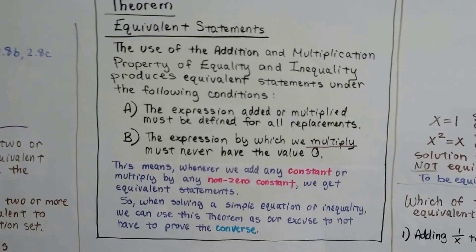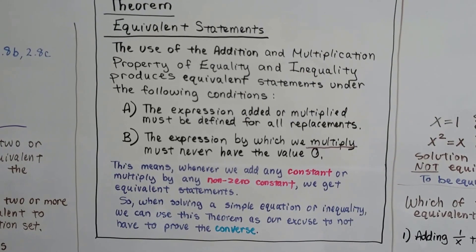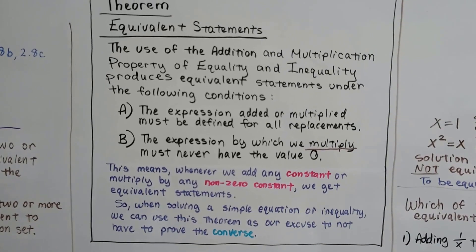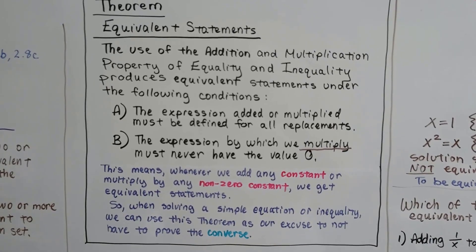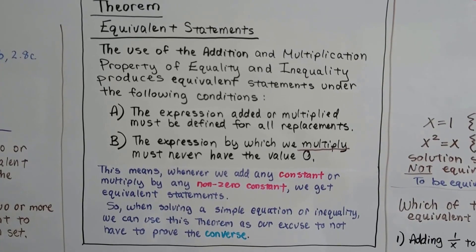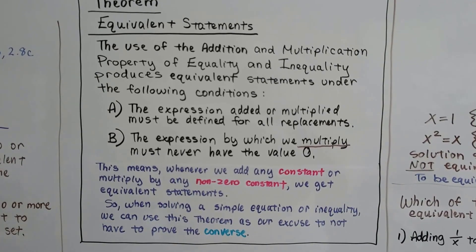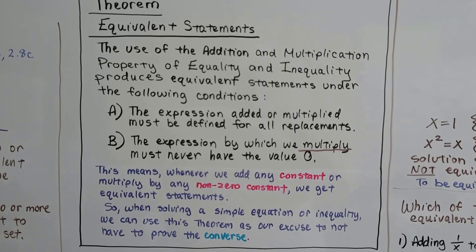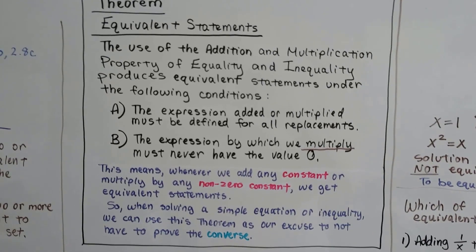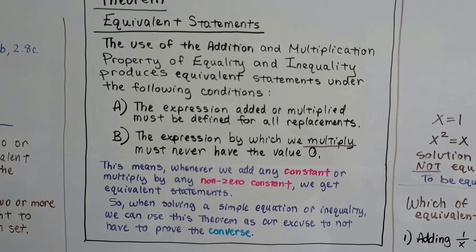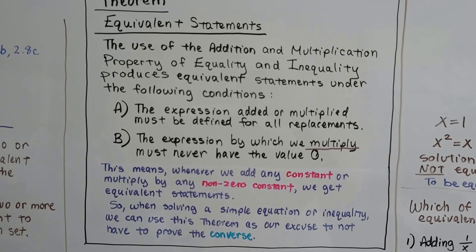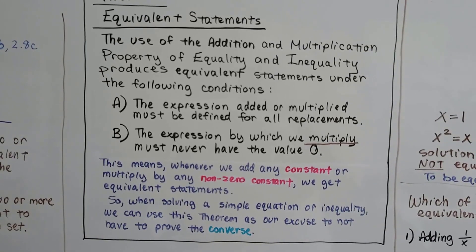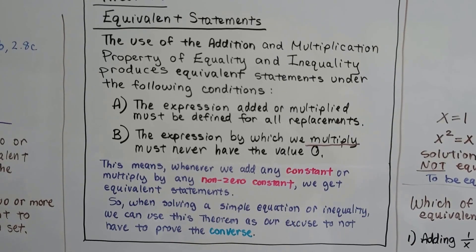Here's the theorem: the use of the addition and multiplication property of equality and inequality produces equivalent statements under the following conditions. The expression added or multiplied to each side must be defined for all replacements, and the expression by which we multiply must never have the value zero. Whenever we add a constant or multiply by any non-zero constant, we get equivalent statements. So in solving a simple equation or inequality, we can use this theorem as our excuse to not have to prove the converse.